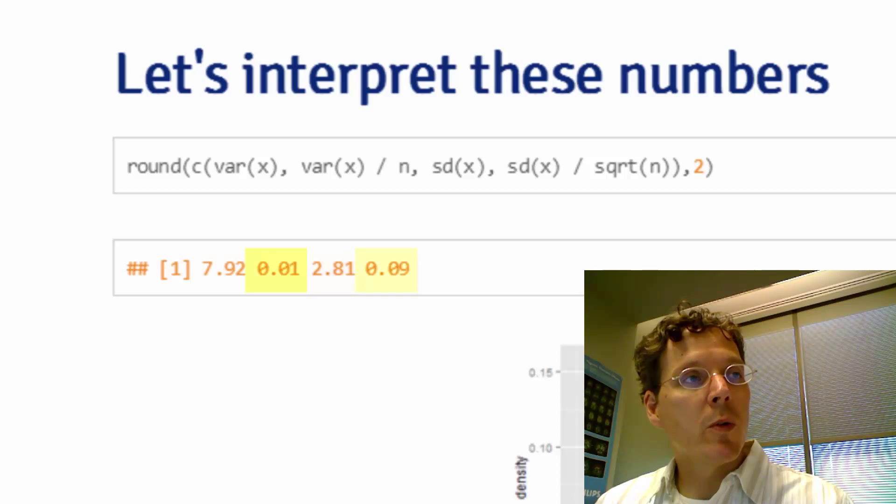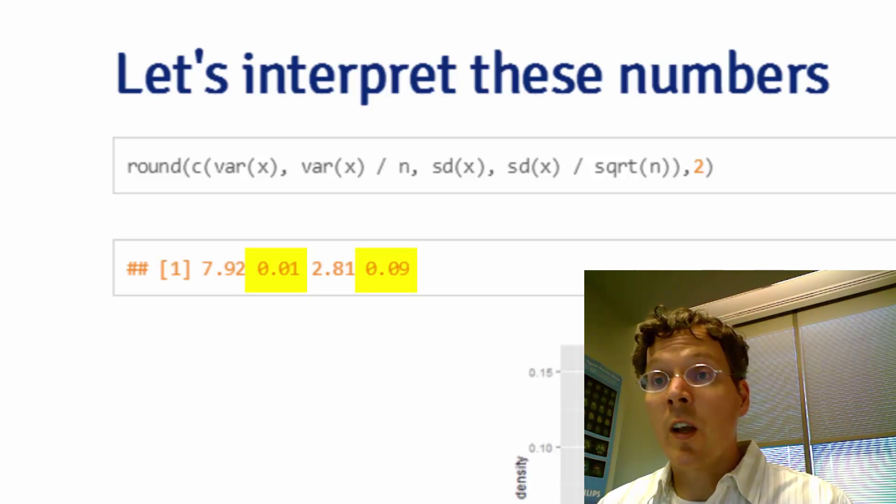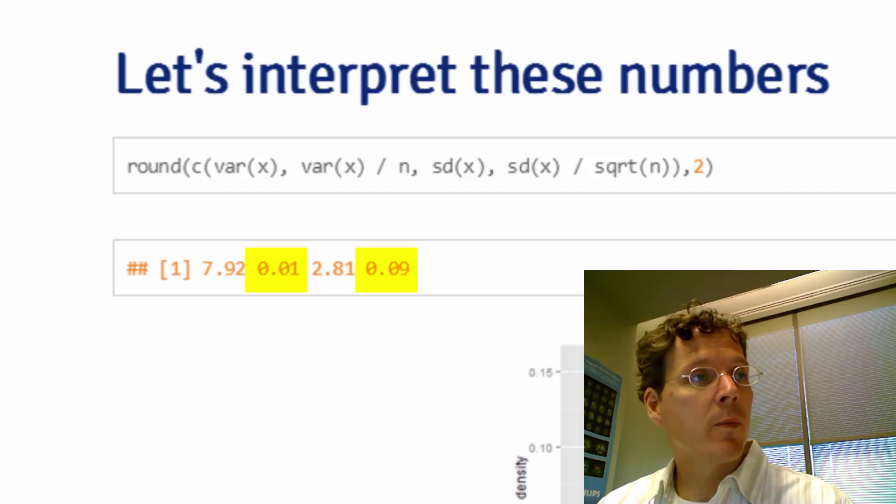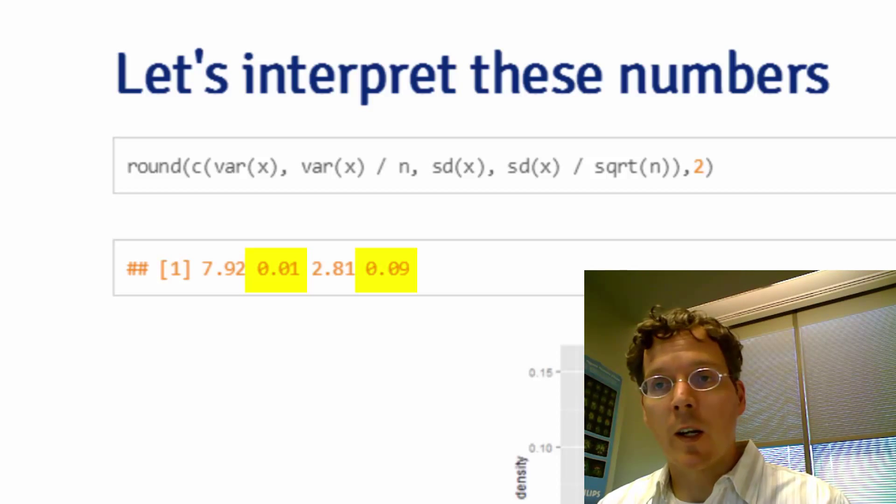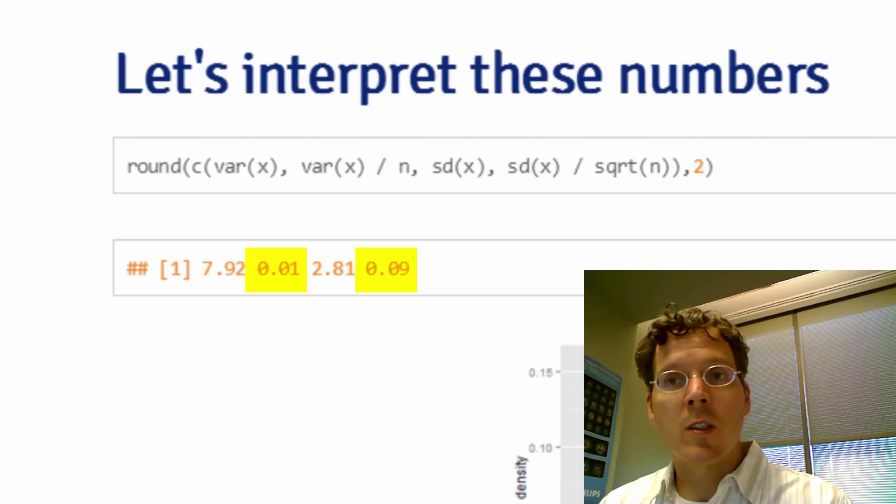So 0.01 and 0.09 are no longer talking about the variability in the children's heights. It's talking about the variability in averages of n children's heights. So 0.09 is probably the most meaningful one, and it's the standard error, or in other words, the standard deviation in the distribution of averages of n children's heights.